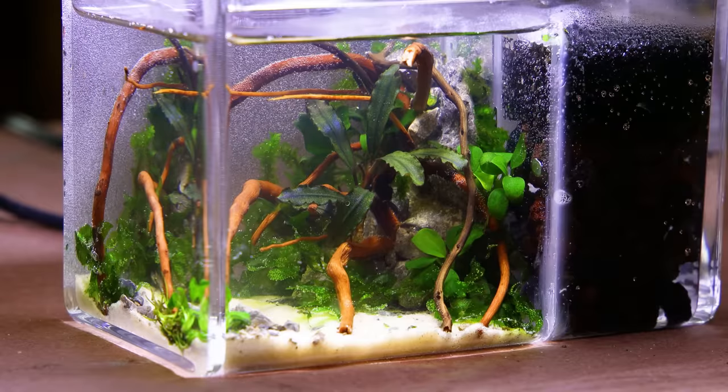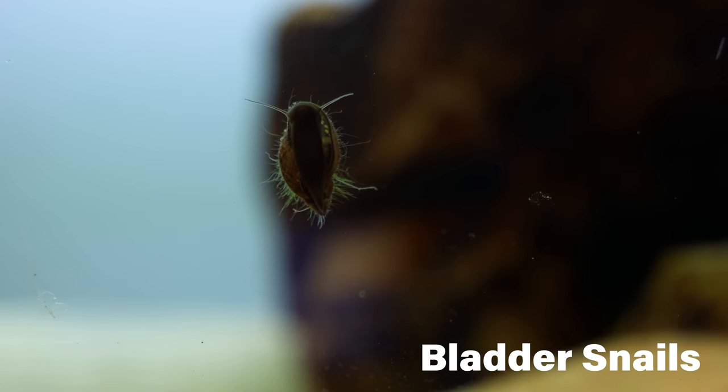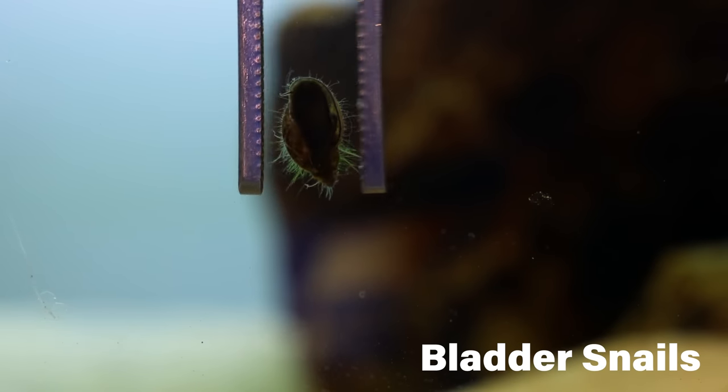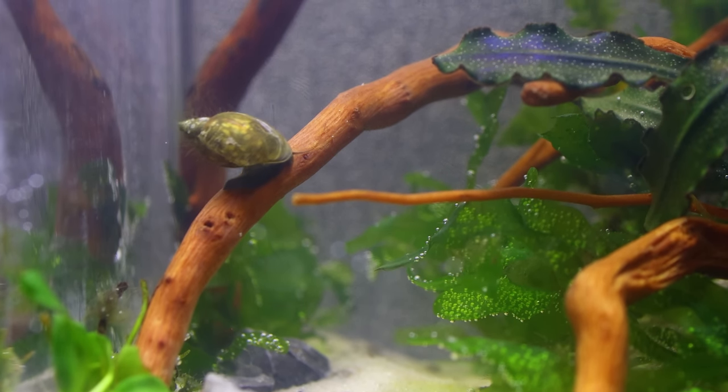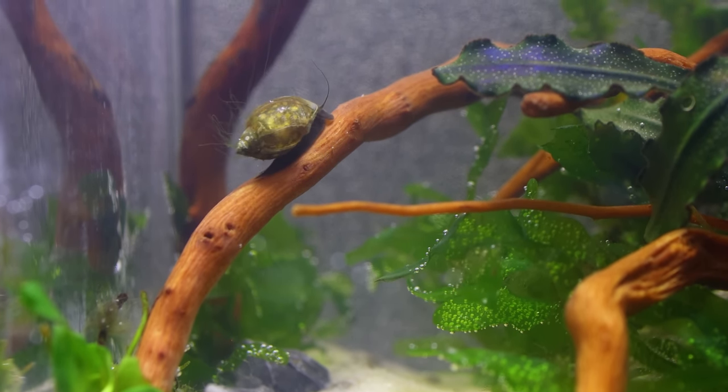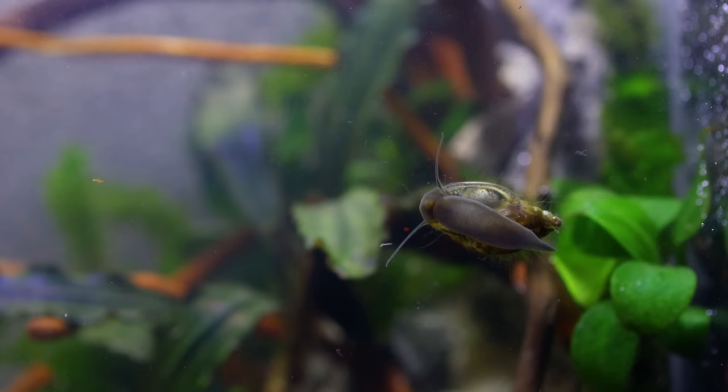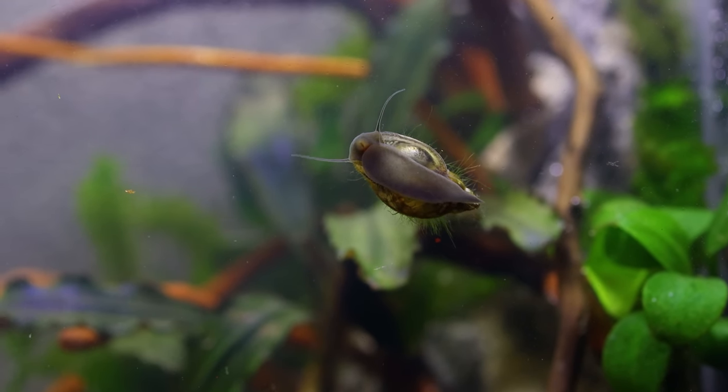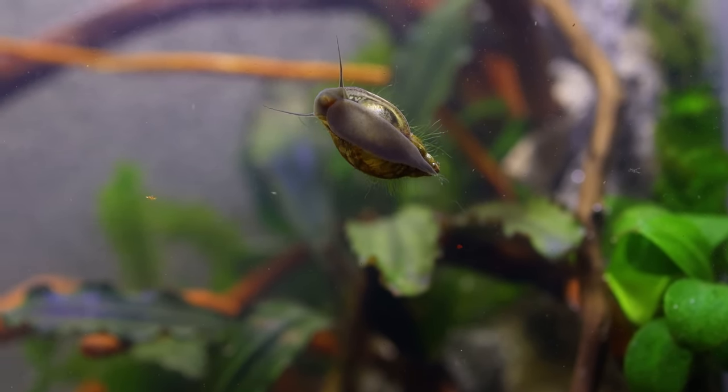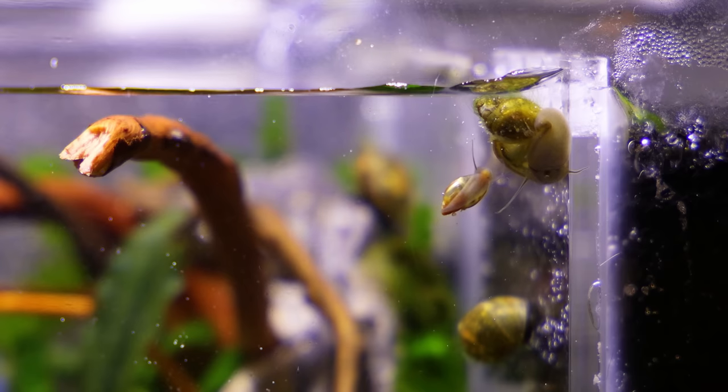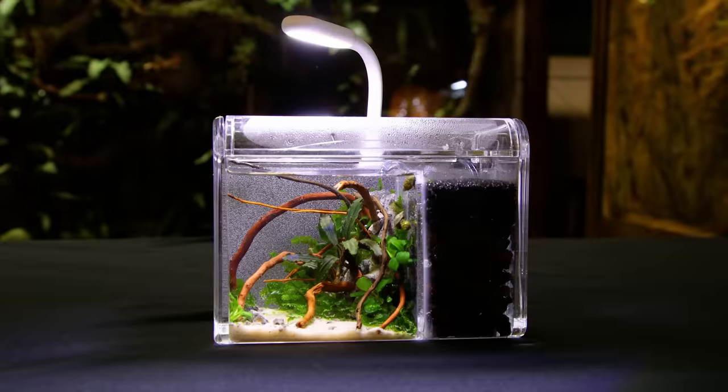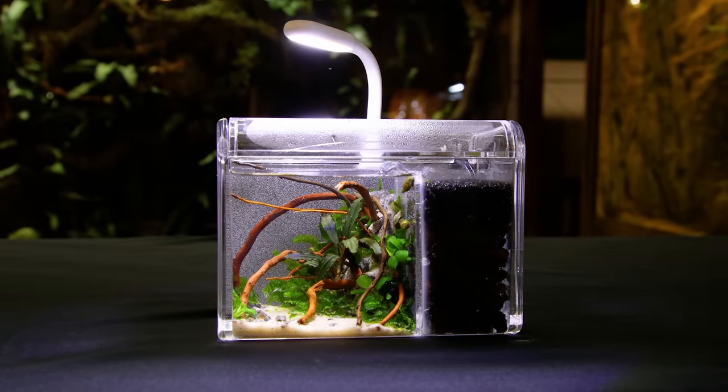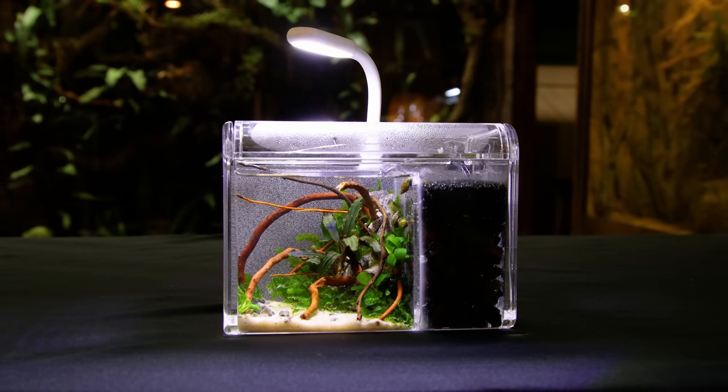With a setup of this size, I felt that the only suitable inhabitants were probably snails. So I went to one of my other aquariums, collected a few bladder snails, and put them in this one. They cruised around, explored, and honestly looked great in this environment. My goal was to create a micro aquarium that appears large despite its stature, and I think I pulled that off quite well.